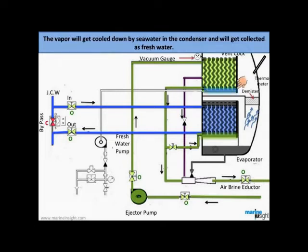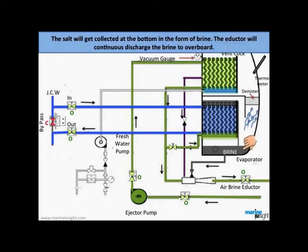The vapor will get cooled down by seawater in the condenser and will get collected as freshwater. The salt will get collected at the bottom in the form of brine. The eductor will continuously discharge the brine to overboard.